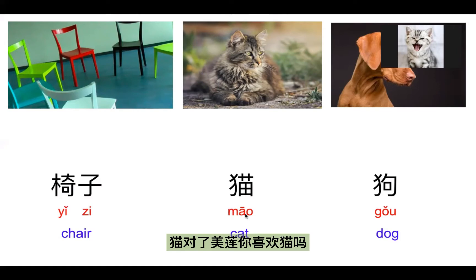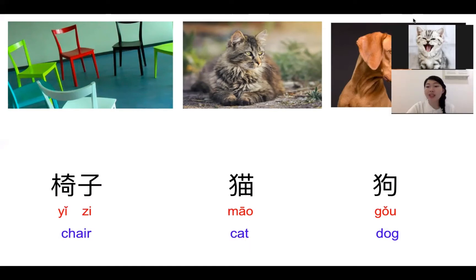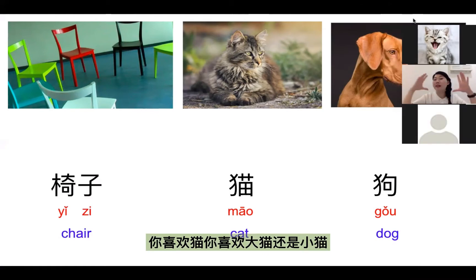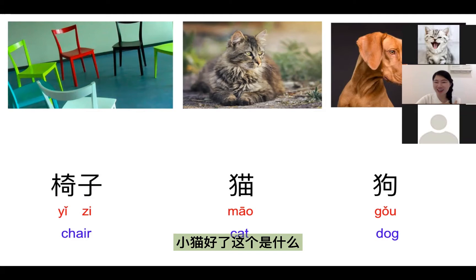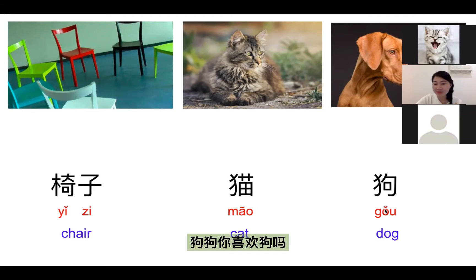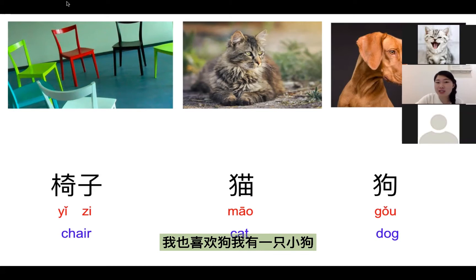猫,对了。美莲,你喜欢猫吗?我喜欢猫。你喜欢大猫还是小猫?小猫。我也喜欢猫。好了,这个是什么?狗。狗。你喜欢狗吗?对呀,我喜欢。你喜欢?我也喜欢狗。我有一只小狗。